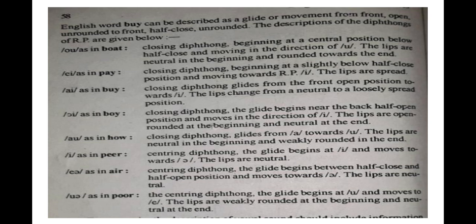/ɪə/ as in 'fear': centering diphthong, the glide begins at /ɪ/ and moves towards /ə/; the lips are neutral. /eə/ as in 'air': centering diphthong, the glide begins between half close and half open position and moves towards /ə/; the lips are neutral. /ʊə/ as in 'pour': centering diphthong, the glide begins at /ʊ/ and moves towards /ə/; the lips are weakly rounded at the beginning and neutral at the end. If you read it again and again, I hope it will be clear to you.